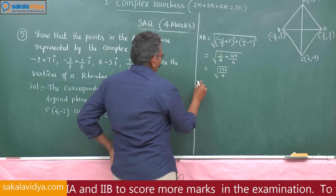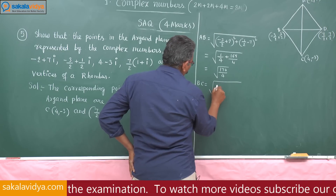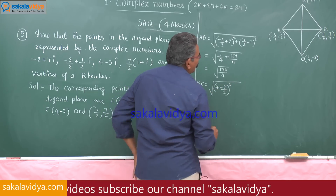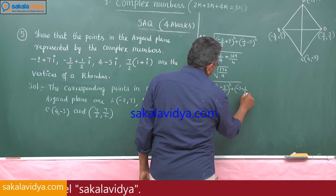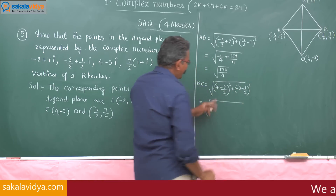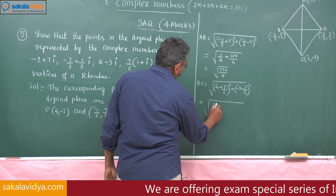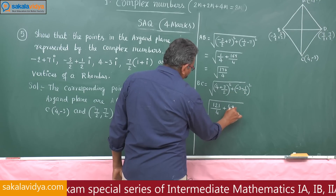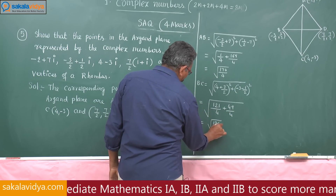Now BC: root of (4 plus 3 by 2) squared plus (minus 3 minus 1 by 2) squared. This gives root of 1 by 4 plus 169 by 4, which equals root of 170 by 4. So BC equals AB.